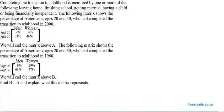We will call the matrix above A. The following matrix shows the percentage of Americans ages 20 and 30 who had completed the transition to adulthood in 1960. This is the same information 40 years earlier, and we'll call this matrix B.